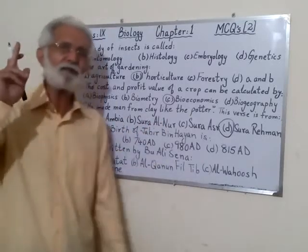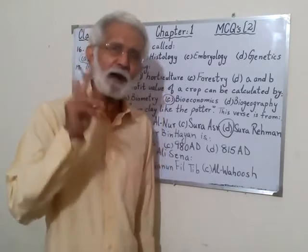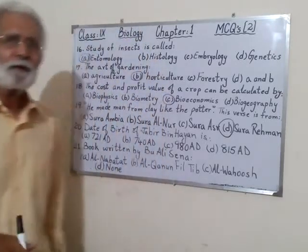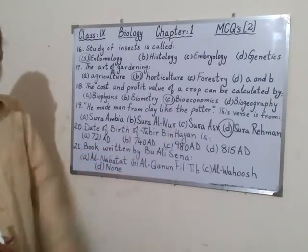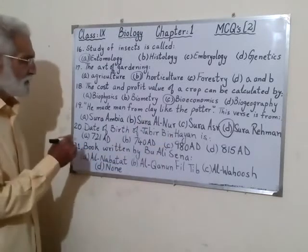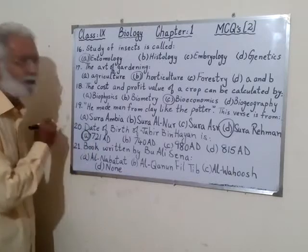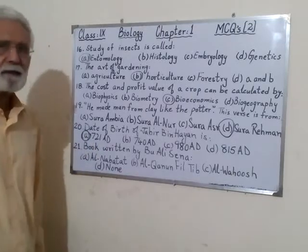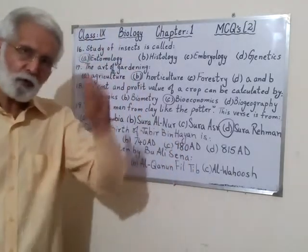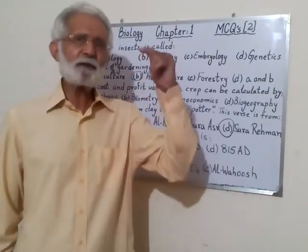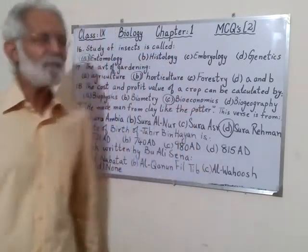Number 20: the date of birth of Jabir bin Haiyan. When I was teaching you Muslim scientists, I told you that you have to learn all the dates of birth. The date of birth of Jabir bin Haiyan is 721 AD. Go through the book again and learn all the birth and death dates of all the Muslim scientists — that is very important.